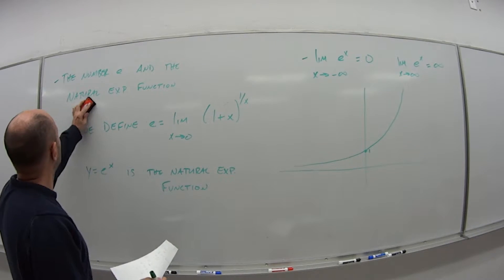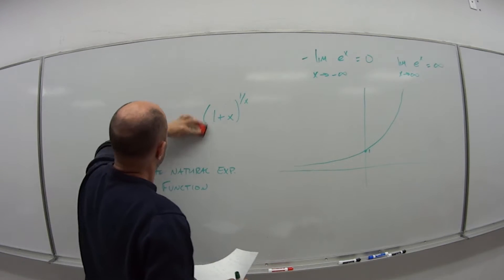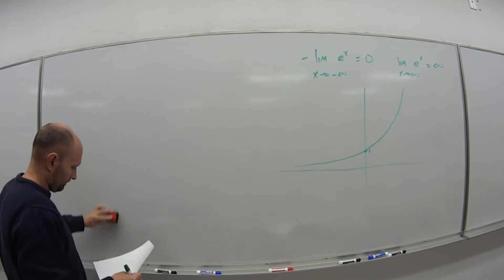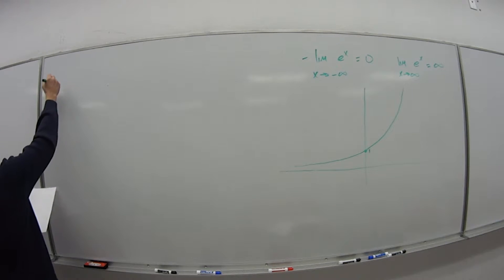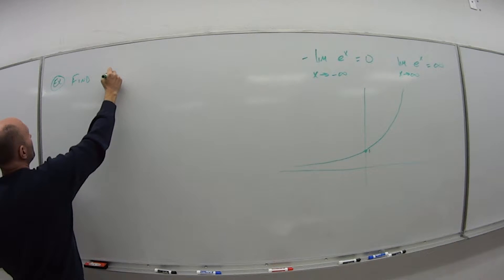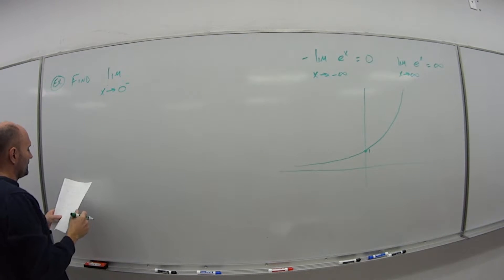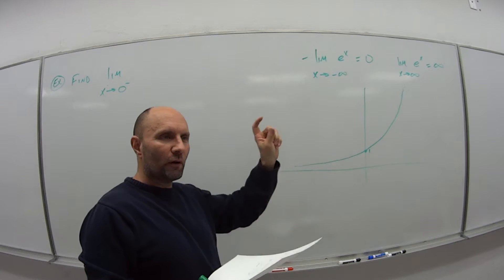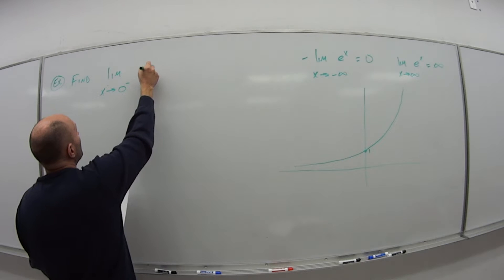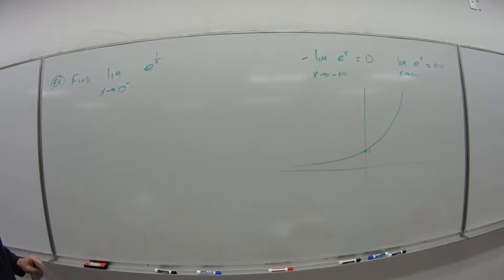Let's try a couple examples. The first one: if I want to find the limit as x goes to 0 from the left side, remember if we have some number and a plus or minus, we're talking either from the left side or from the right side. Of e to the 1 over x power.